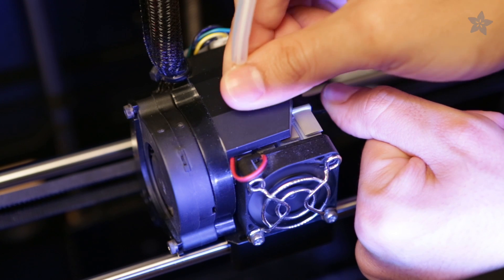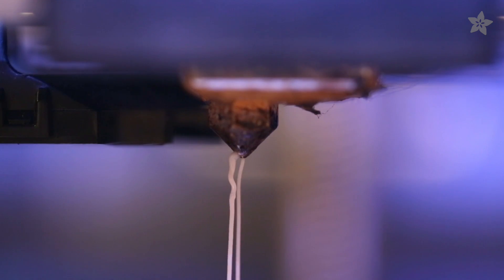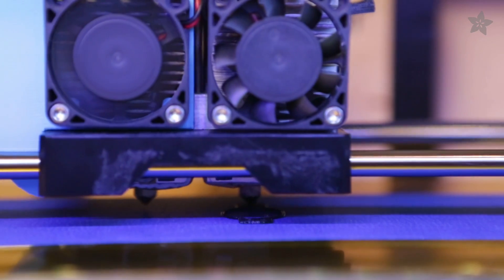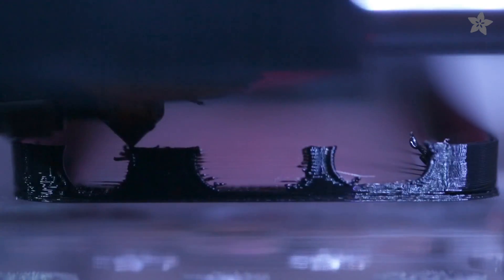This filament extrudes well at 225 celsius and sticks to most common build plate surfaces like painter's tape, Kapton tape, acrylic, and glass.